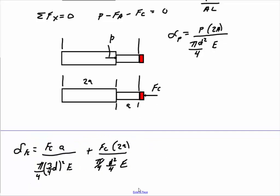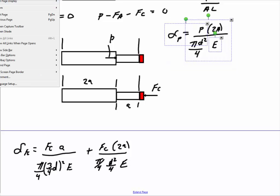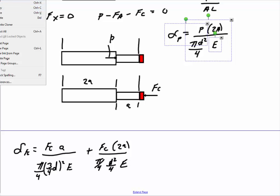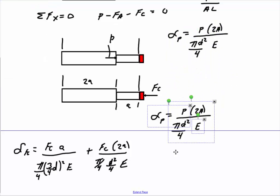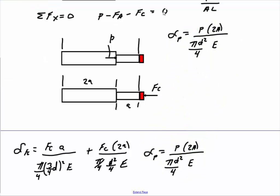So these deflections are the same. So what you can do would be set these equal to one another. So I'm going to grab this. We'll clone it. Bring it down here. We'll get rid of this, and we're just setting these equal to one another. That's all we're going to do.